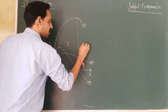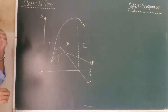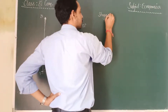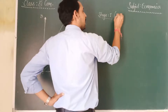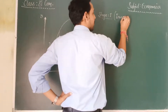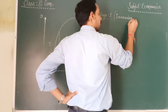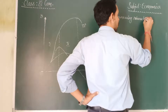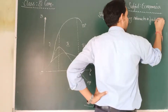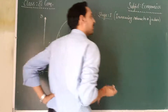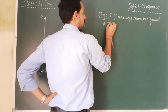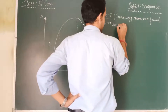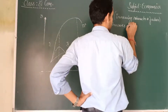Let us talk about Stage 1. Stage 1 is called Increasing Returns to a Factor. In Increasing Returns to a Factor, TP increases at an increasing rate.